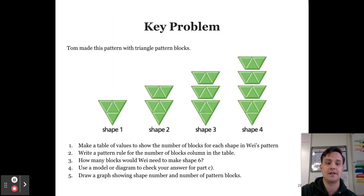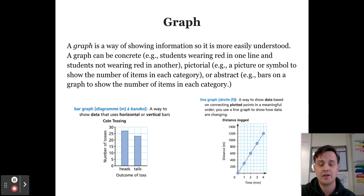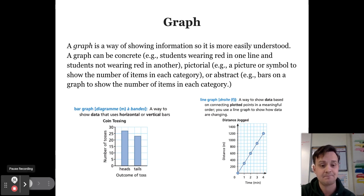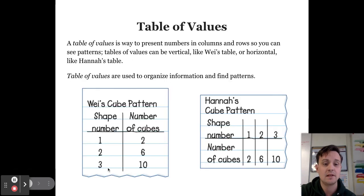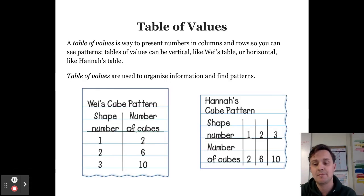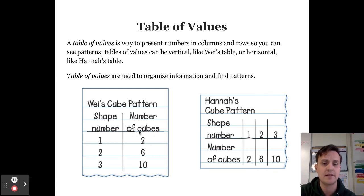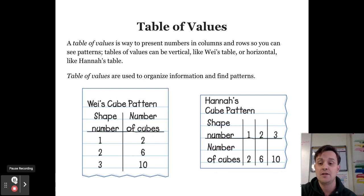To review: a graph is a way of showing information so it can more easily be understood — there are many different types, and the two we'll use most are bar graphs and line graphs. A table of values is a way to present numbers in columns and rows so that you can see patterns. Here is an example of a vertical table of values and a horizontal table of values. Enjoy using these tools this week, and see you next week!